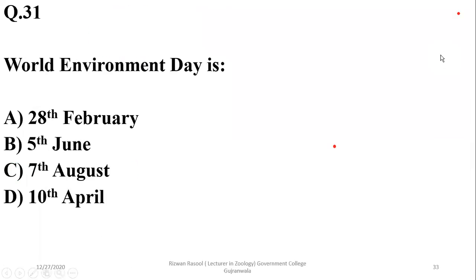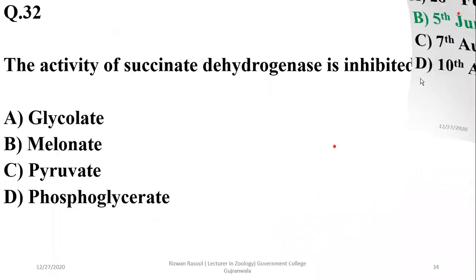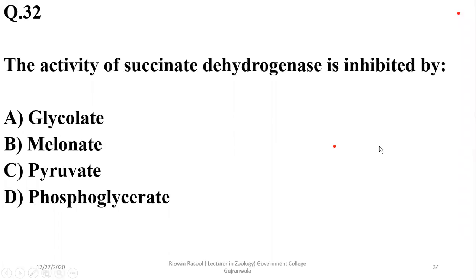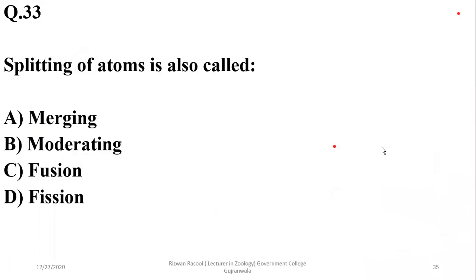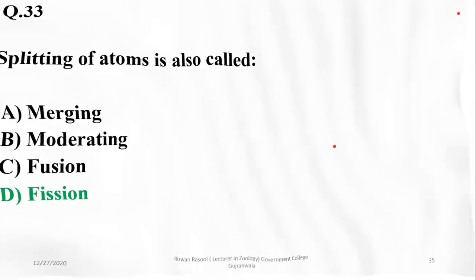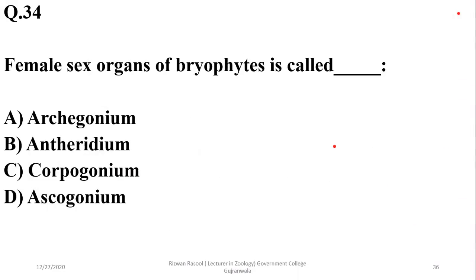Question 30: World Environment Day is on 5th June — beta. Question 31: The activity of succinic acid dehydrogenase is inhibited by malonic acid (malonate) — beta. Question 32: Separating of atoms is also called fission — delta. Question 33: The female sex organ of bryophytes is the Archegonium.